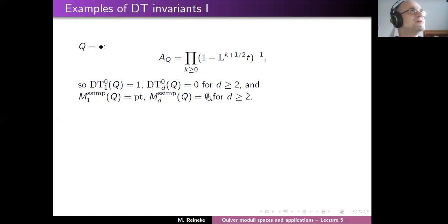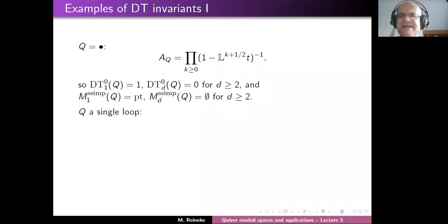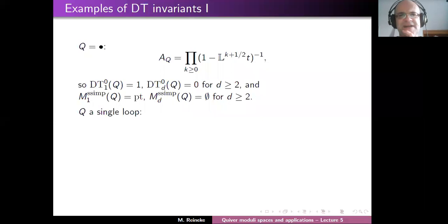I realize I made a mistake there — I'll correct this in the distributed slides. As a second example, consider the single loop quiver: the problem of classifying one matrix up to conjugation. The moduli spaces of semi-simples are known — the coarsen map attaches to a matrix the coefficients of its characteristic polynomial. Let me work out the motivic generating series, its Euler product factorization, read off the DT invariants, and compare them to the moduli spaces.